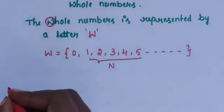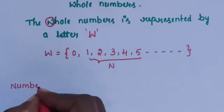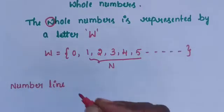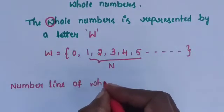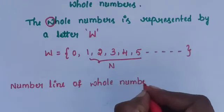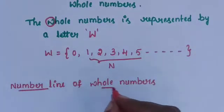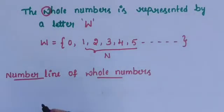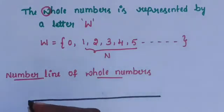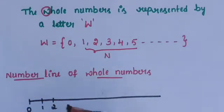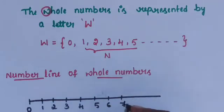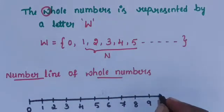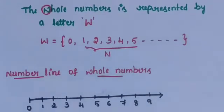Next is the number line of whole numbers. Draw the number line of whole numbers. It starts from 0, 1, 2, 3, 4, 5, 6, 7, 8, 9. This is the number line of whole numbers.